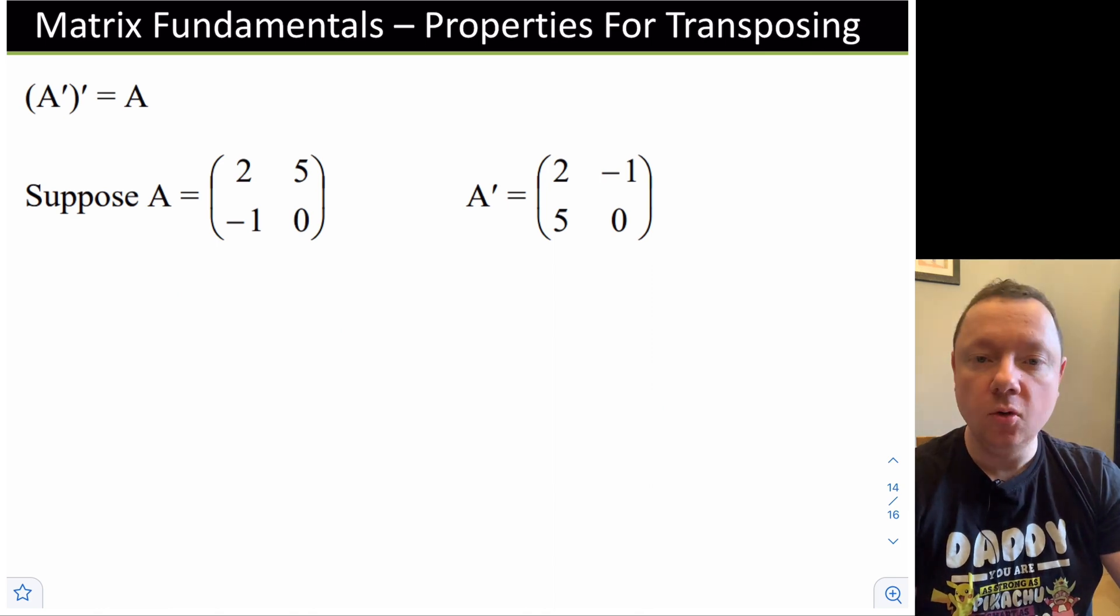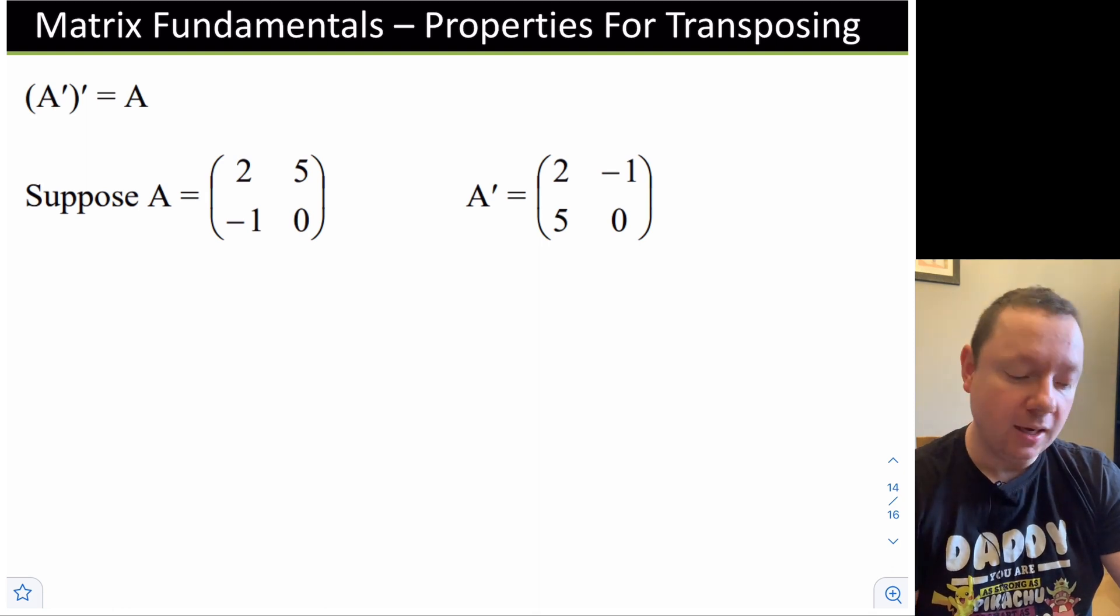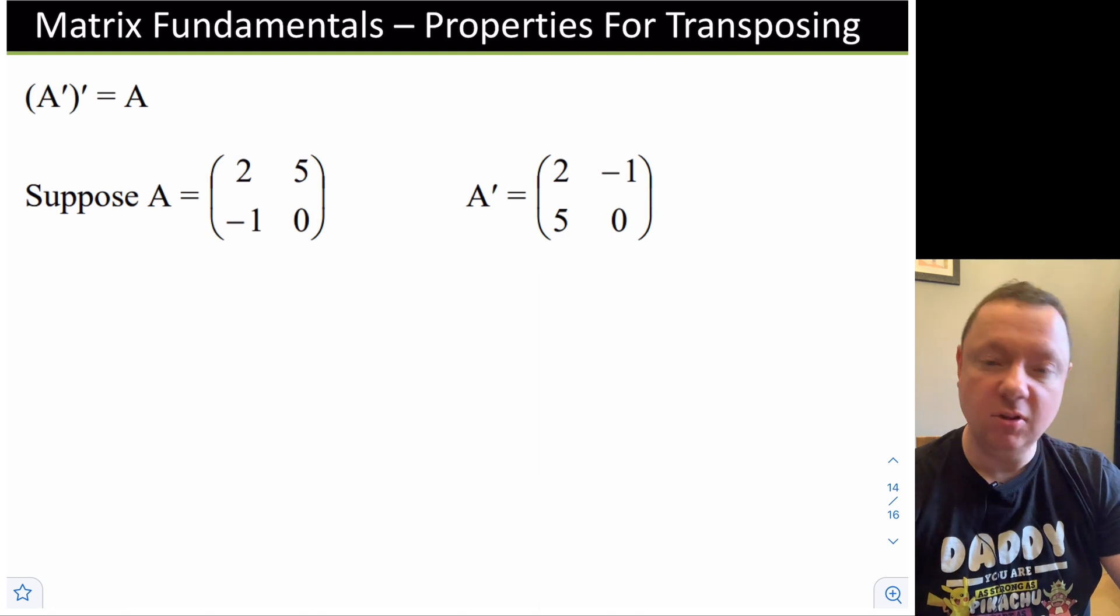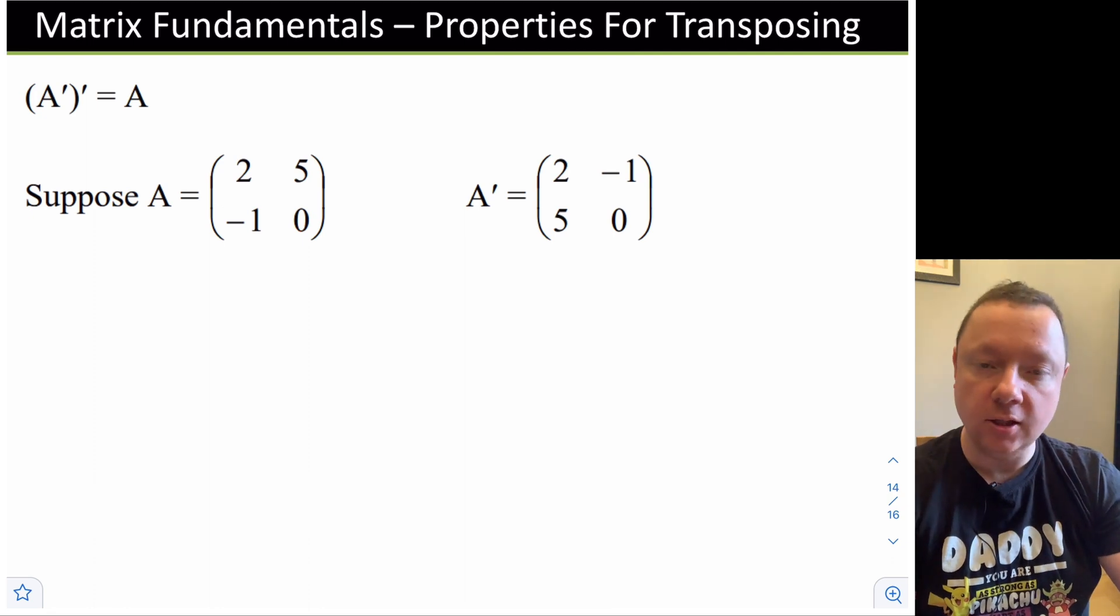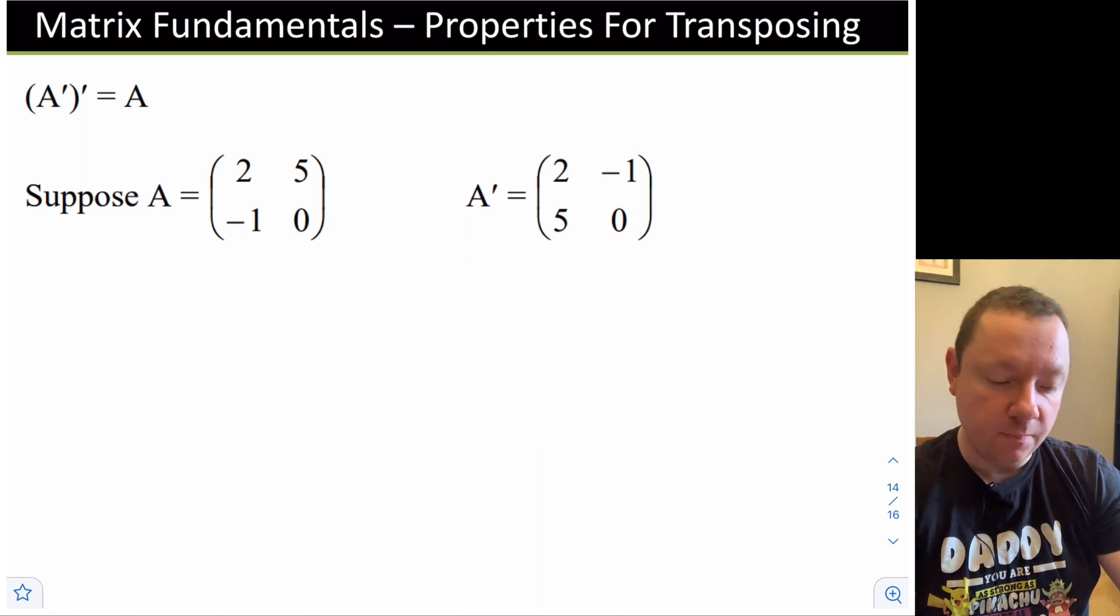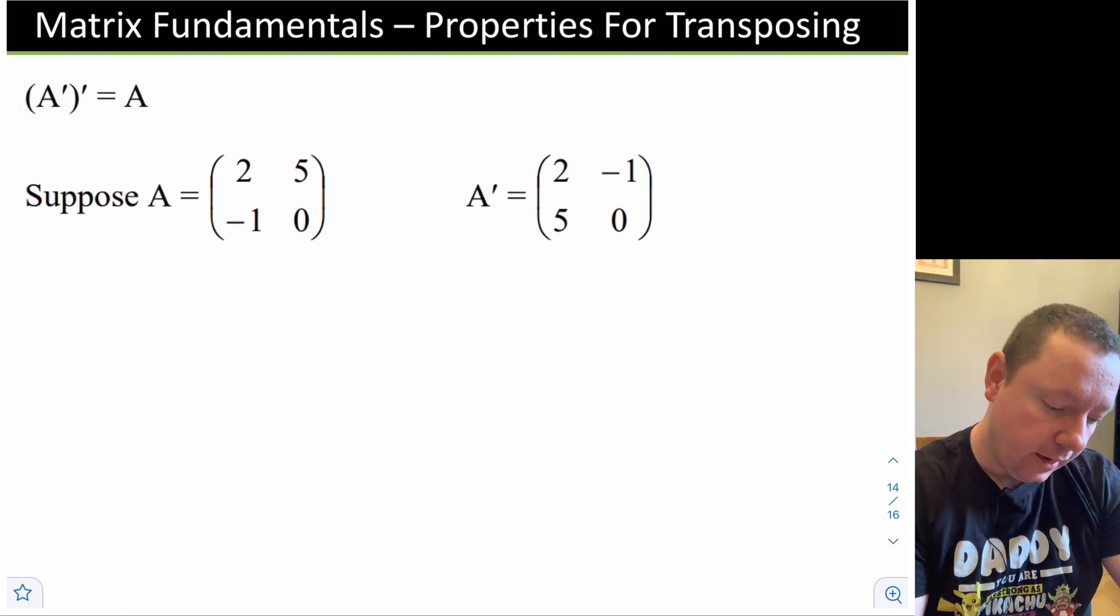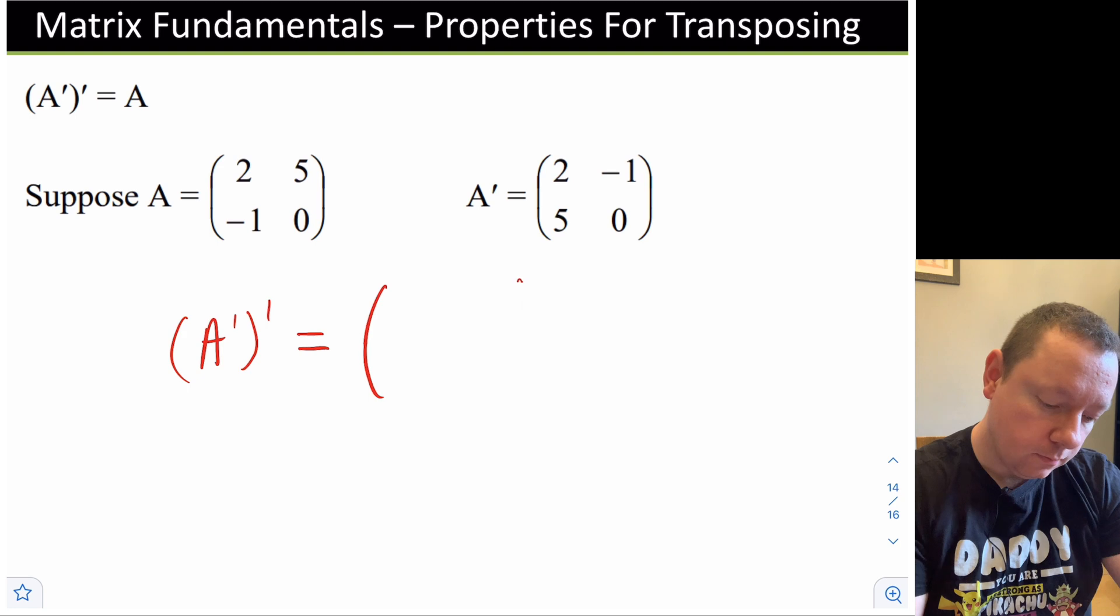Let's look at some properties for transposing. Imagine we've got A. If we take the A transpose and then we transpose it again, we get A back. Let's check that. Let's say we've got two matrices. A is 2, 5, -1. It should be clear that the transpose of A is 2, 5 becomes 2, 5. -1, 0 becomes -1, 0. If we transpose that back again, then A transpose, transposed again: 2, -1 becomes 2, -1, 5, 0 becomes 5, 0, which equals A as required.